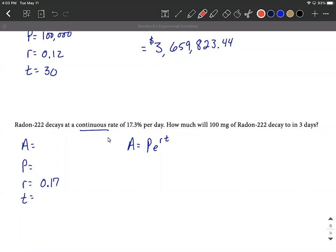However, we got to be careful about this keyword that decays. Because it's decaying, it's getting smaller, and our rate is going to be negative 0.17. Alright, next up, we want to know how much will 100 milligrams, so we start with 100 milligrams, decay of radon-222 decay to in three days. So our time frame is going to be three.